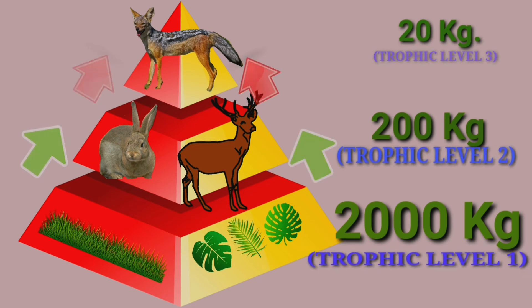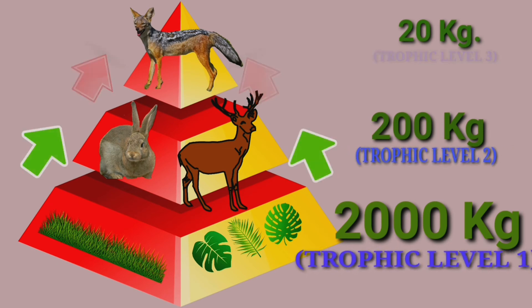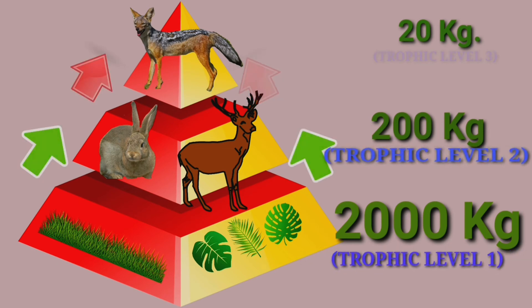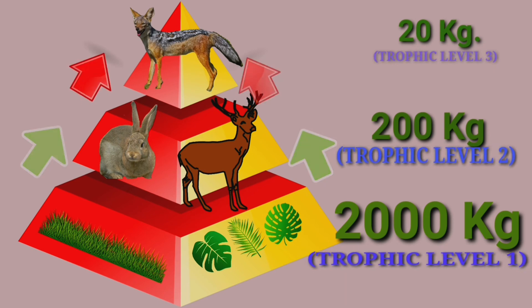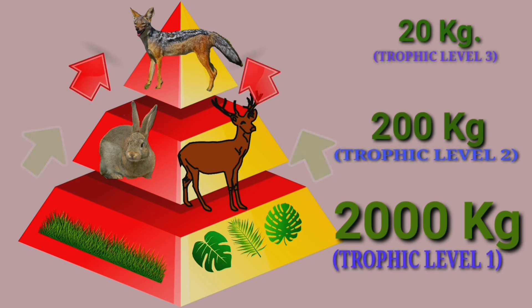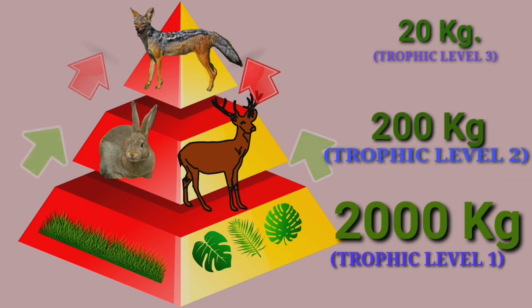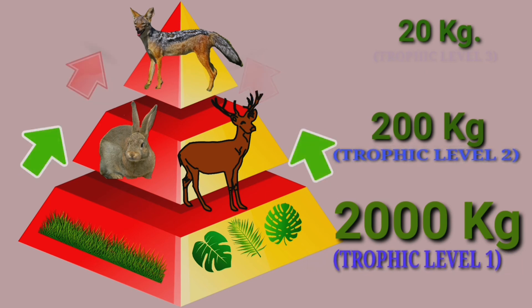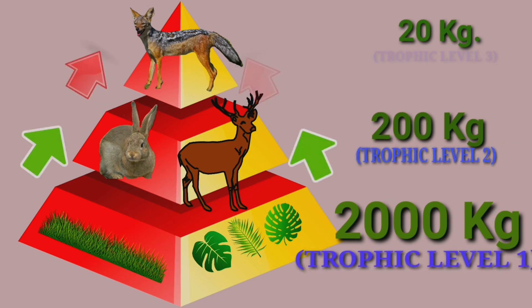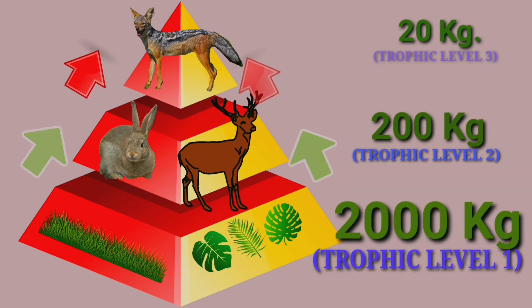So it indicates that for every 20 kg of biomass at the top, there must be at least 2000 kg of producers in that ecosystem. This is what Lindermann's 10% law is all about.